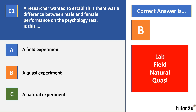Just a heads up on your specification: laboratory, field, natural, and quasi are named as the experimental methods you're required to know. What we have here is an example of a quasi experiment, and this is something that students often struggle with. A quasi experiment basically means that in terms of allocation to the different groups of the independent variable, I can't use random allocation. The reason is there are particular features of an individual — like being male or female — that I can't change, which determines which condition they're in.